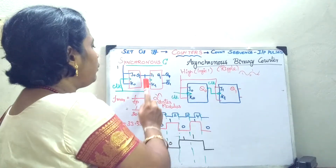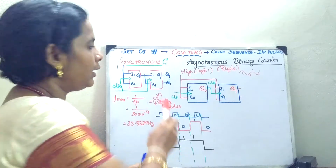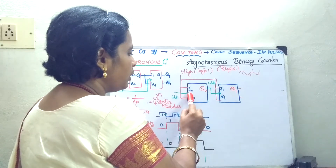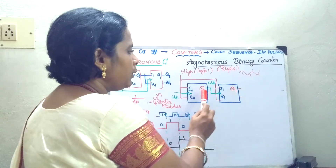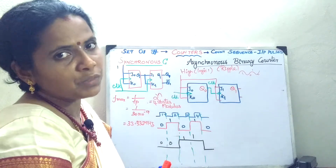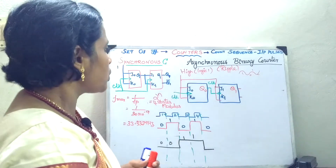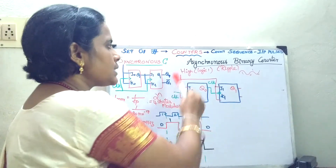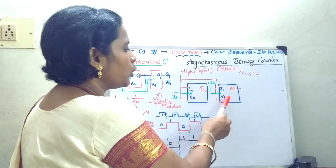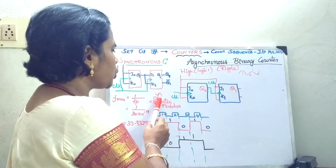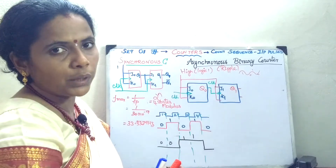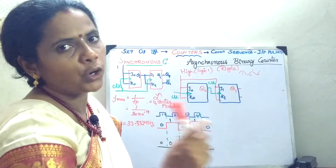The only difference you should know between asynchronous and synchronous: synchronous means all the flip-flops are going to be given the signal simultaneously to each and every flip-flop, whereas in asynchronous the first flip-flop is given the clock signal separately, and after that the output of the first one is the clock pulse for the second one and so on. Now we will analyze the asynchronous or ripple counters. I have taken a 2-bit counter — 2 bits means 2 power n gives 4 states, so modulus is 4. It is a mod-4 counter. The number of states specifies the modulus.